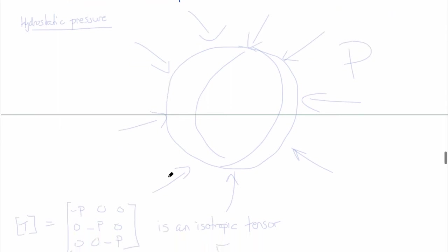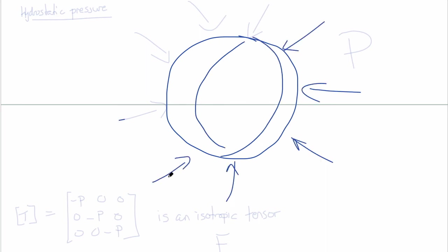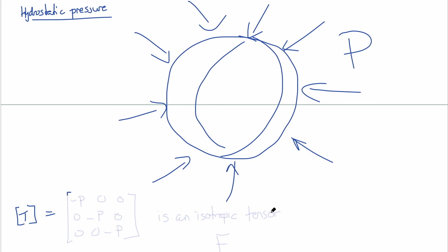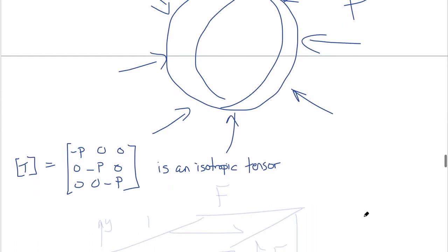A simple example we've mentioned before is a hydrostatic pressure stress case. Imagine a sphere with pressure P acting inward in all directions — P is a negative stress, normal to the surface everywhere. The components of this hydrostatic stress case are just −P on all three diagonals. These are not only principal stresses, but this is also an isotropic stress tensor because it's the same in every frame of reference.